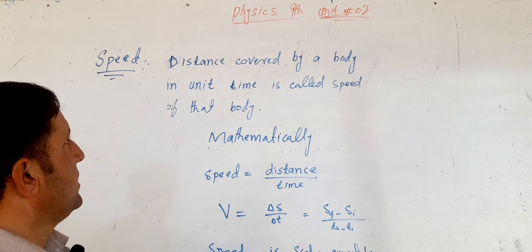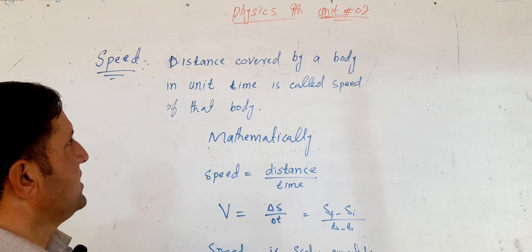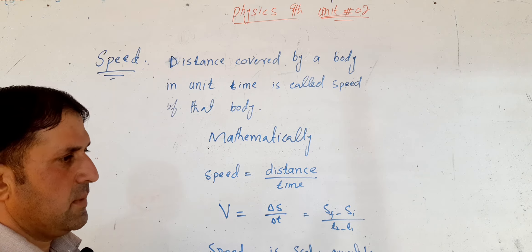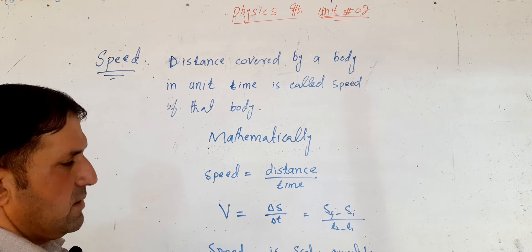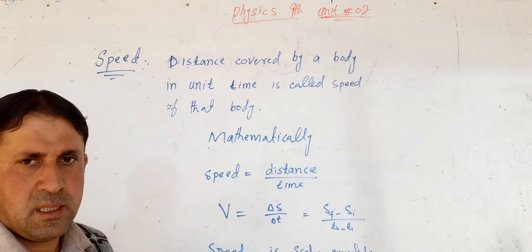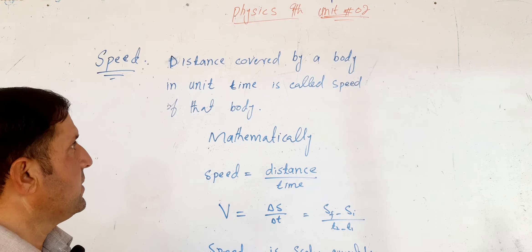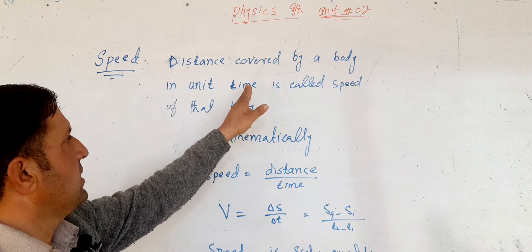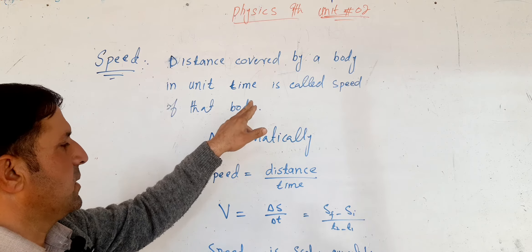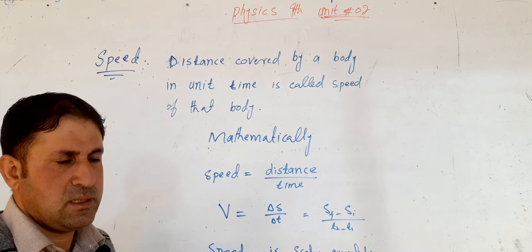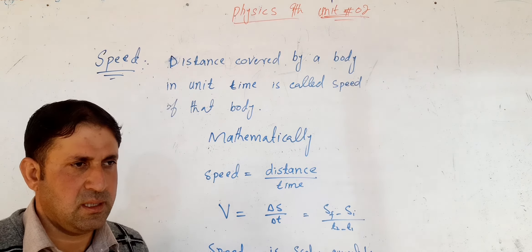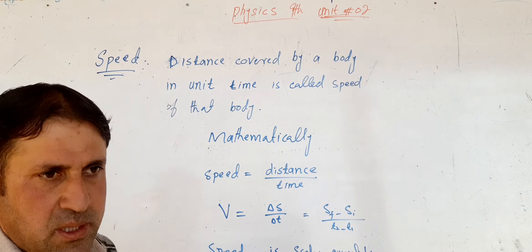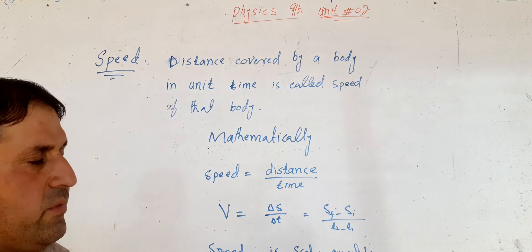Chapter 2, Kinematics. The next topic is speed. The distance covered by a body in unit time is called the speed of that body. For example, if one body covers the same path in 1 second compared to another body, we can compare their speeds.